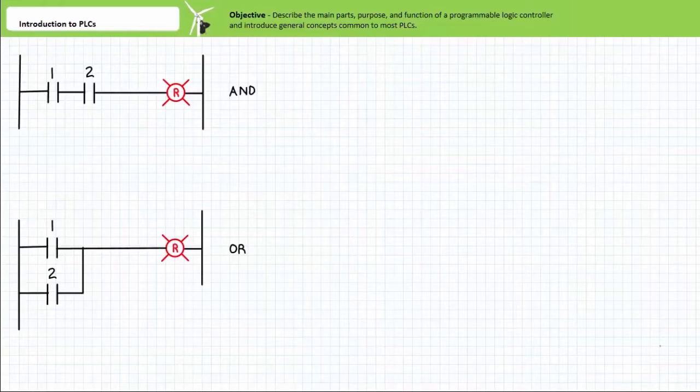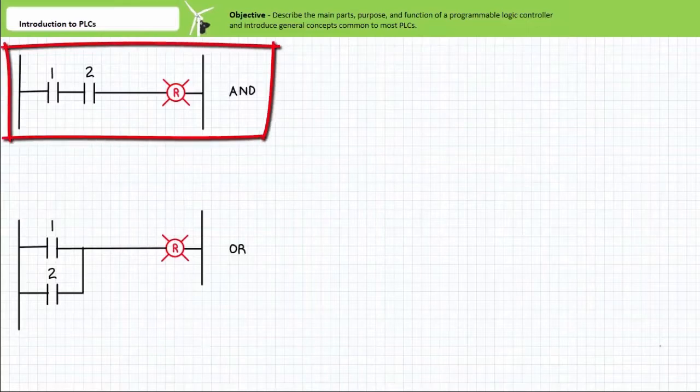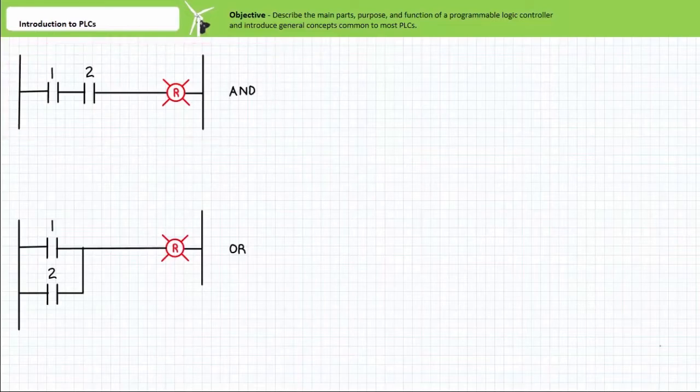As we've previously discussed, logical operations of immense complexity can be created by hard wiring input devices, relays, and output devices in a prescribed fashion. The classic example is the logical AND operator formed by the series connection of two normally open contacts. Contact one and contact two must both close to assert the output.